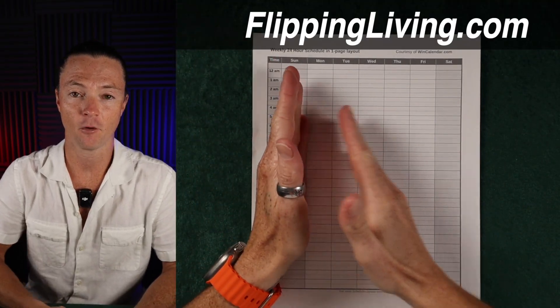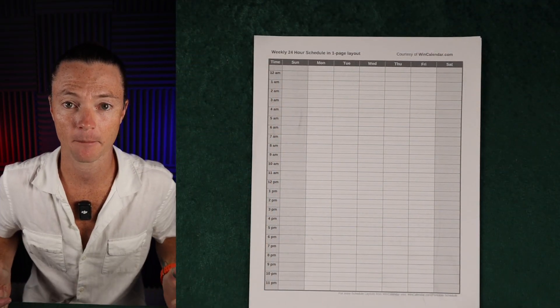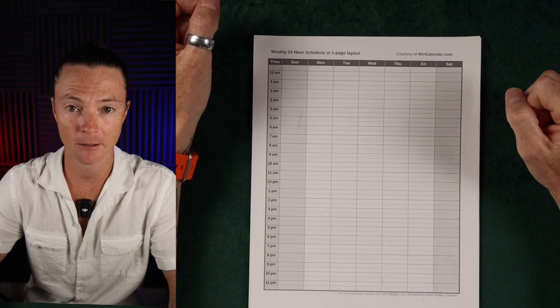There are two steps to this process. For one week, you're going to track your time literally throughout your day, just write down what you were doing in the slots, and I'll explain those in a second.